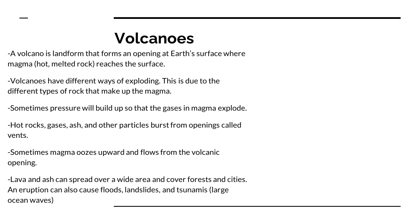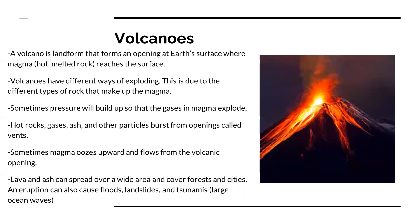Lava and ash can spread over a very wide area and cover forests and cities, and an eruption can cause floods, landslides, and tsunamis which are really big ocean waves. And there's a pretty cool picture of a volcano exploding.